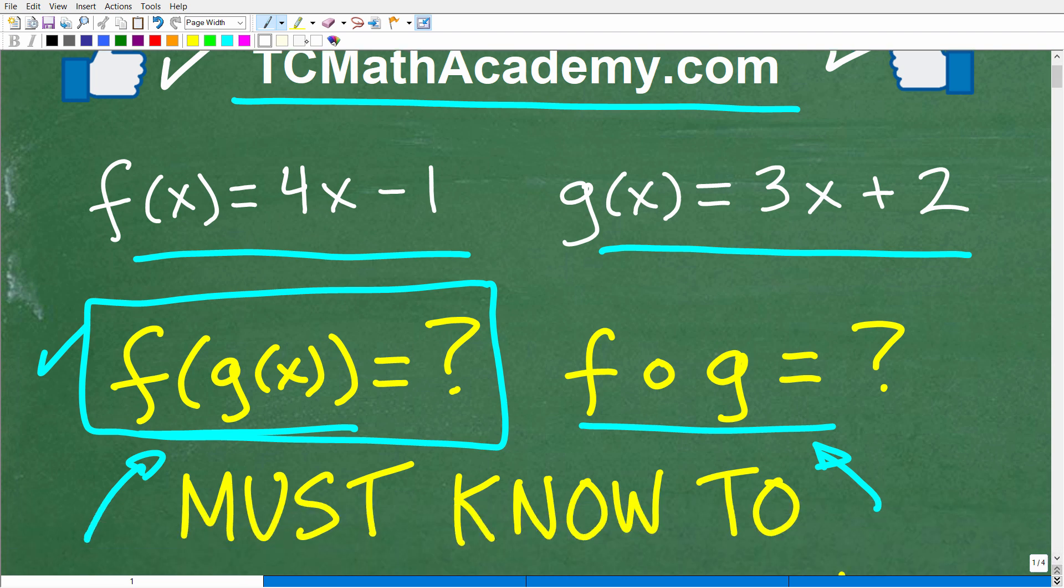Okay, so one more time, we have these two functions, f(x) is equal to 4x minus 1, and g(x) is equal to 3x plus 2. We want to find f of g of x.